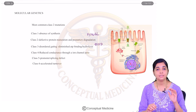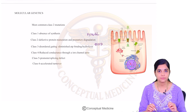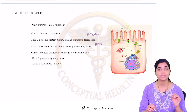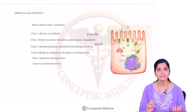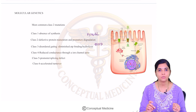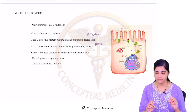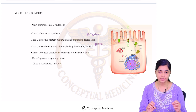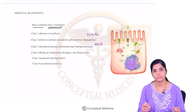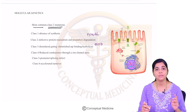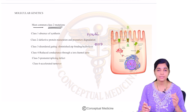Now let us understand the molecular genetics behind CFTR mutations. These targeted therapies go and target the exact genetic mutations that are happening, helping to improve the symptoms of CF. CFTR mutations can be divided into six classes. The most common mutation is class 2.